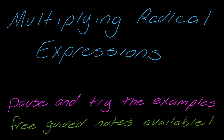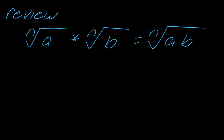In this video we're going to talk about multiplying radical expressions. This is really building off of just the basics of multiplying radicals. The rule is, if I have two radicals with the same index, then I can multiply whatever is under them together, like you see here. I just want to quickly remind ourselves how that skill works.